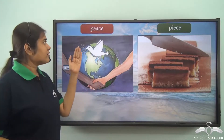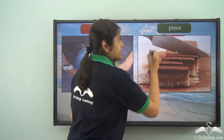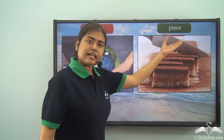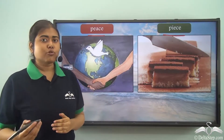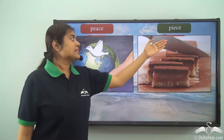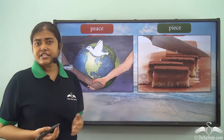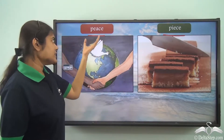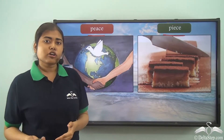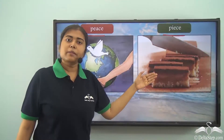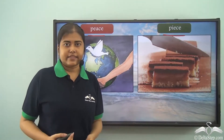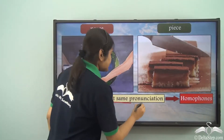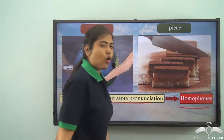Look at these two words. What do we see? Peace and piece. Now in this case the word 'peace' has a different spelling and this 'piece' has a different spelling, but they are pronounced in the same way. Both of these are different in their spellings and meanings but they have the same pronunciation. So 'peace' refers to harmony or non-violence whereas 'piece' refers to small parts or pieces of cake or anything. These two words have different meanings but same pronunciation, and hence they are called homophones.